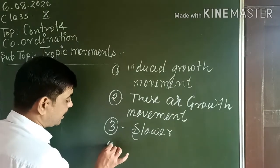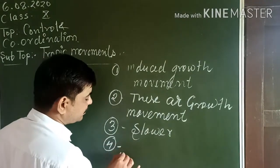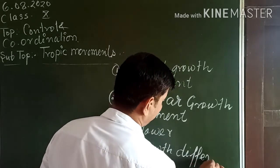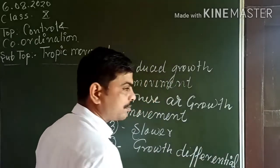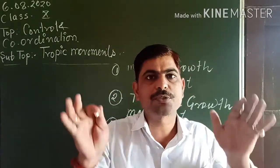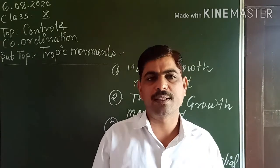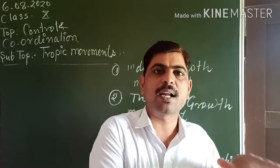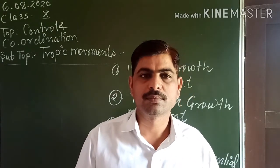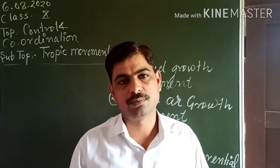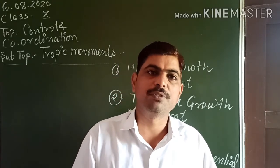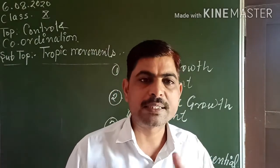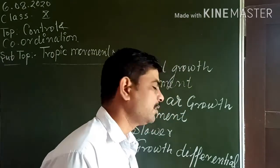This is a Growth Differential type of growth. Growth Differential means there is a different ratio of growth in different parts of the plant. Some parts of the plant will grow faster, some will grow slower, or some parts will grow and some will not. That difference between growth in the same plant in different parts is called Growth Differential.